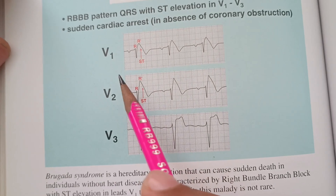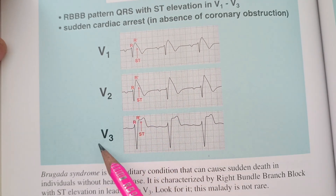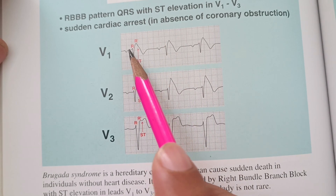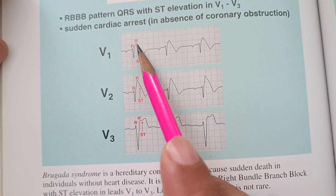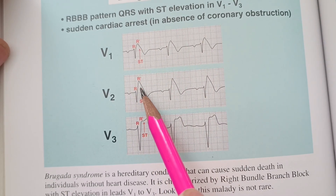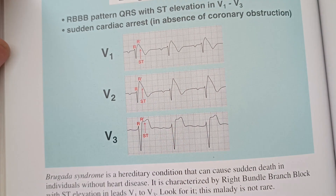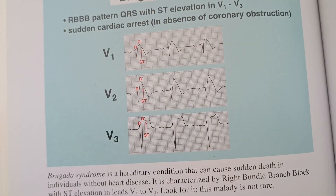Now see the right precordial leads V1 and V2. There is partial RBBB with ST elevation, which is becoming more prominent from V1 to V2 and V3. So this is Brugada syndrome.